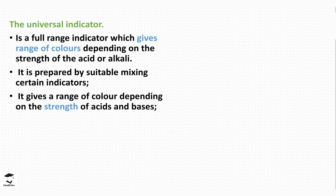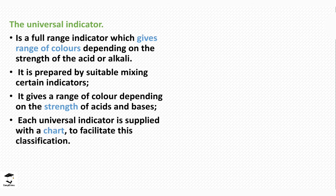The color of the universal indicator changes in intensity depending on the strength of the acid or base. Acids show a certain color, but the color intensity changes depending on the strength of the acid. The same applies to bases. The universal indicator usually comes together with a chart, which helps us read the other component — the pH scale.